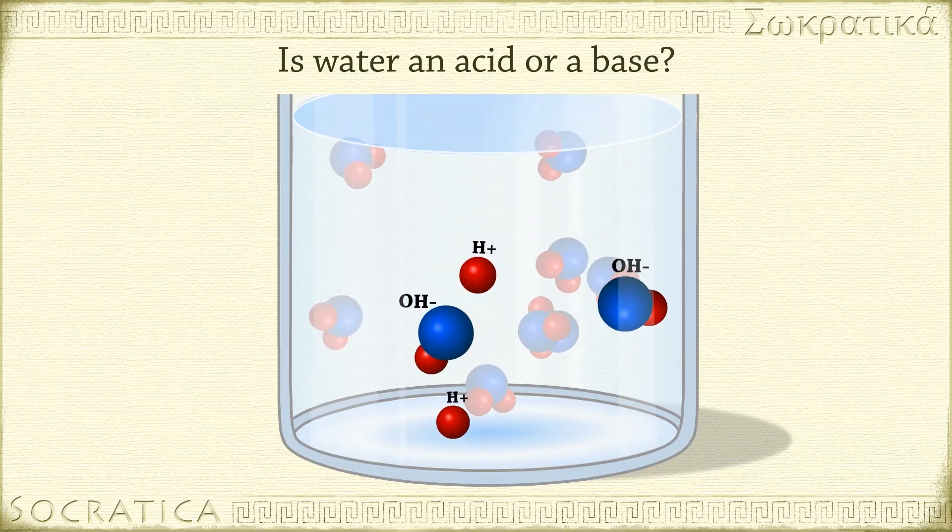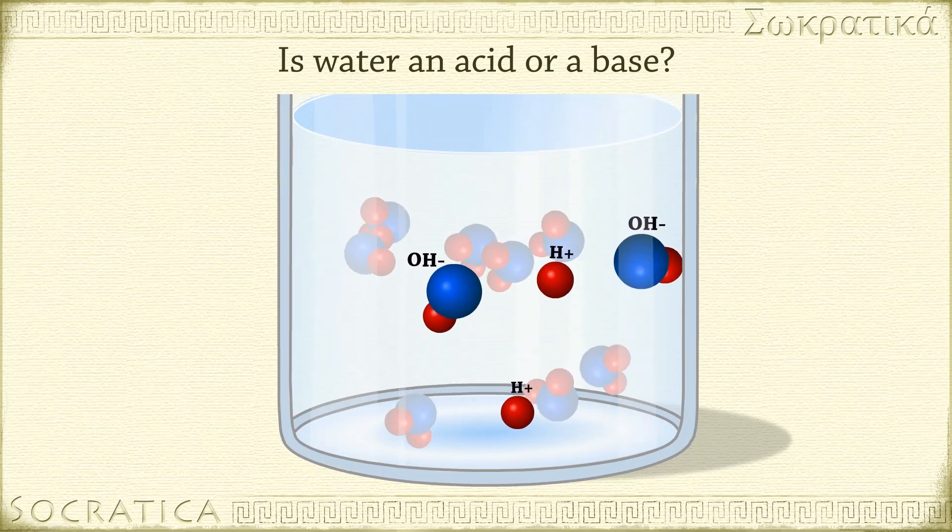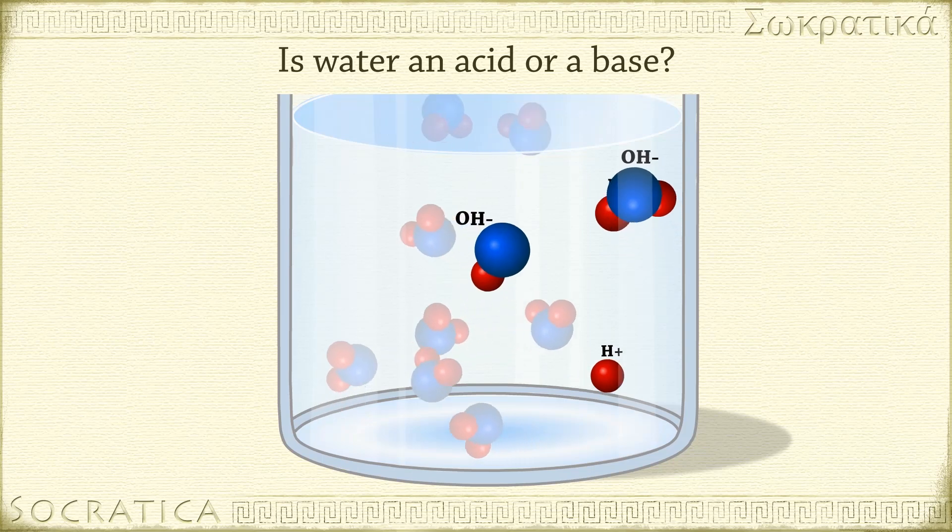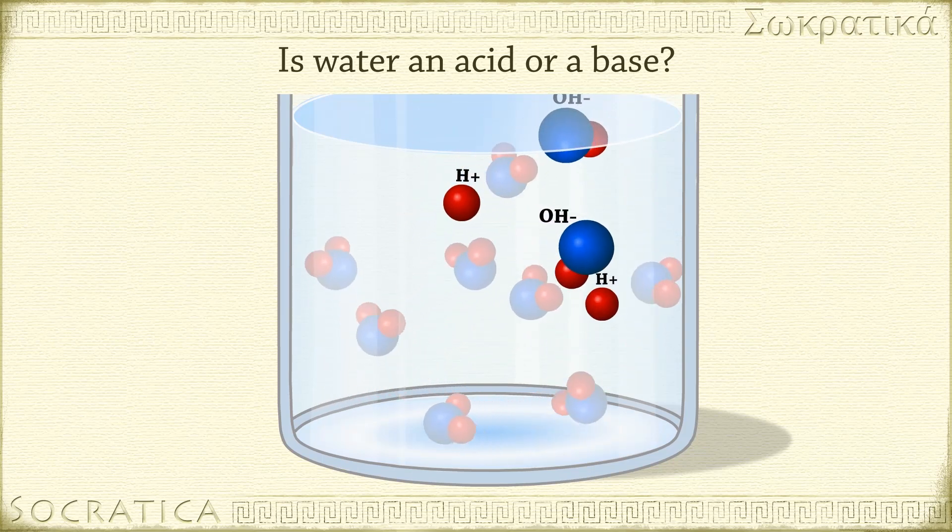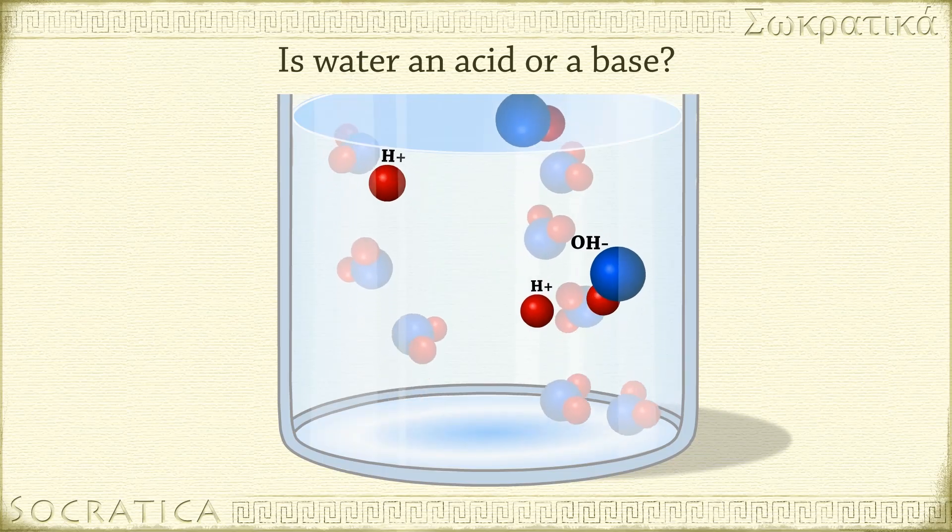The tiny bit of H+ and OH- generated is so small we write the concentration of H+ in terms of pH, which uses a base-10 logarithmic scale.